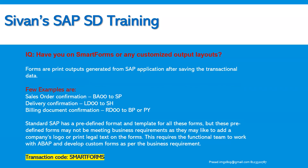Have you worked on smart forms or any customized output layouts? This is simple — it is totally customized, not standard. You can explain whatever you have worked on. These are print outputs generated from the SAP application. Examples: sales order confirmation sent to the sold-to party, delivery confirmation sent to the ship-to party, and billing document confirmation sent to the bill-to party or payer. Standard SAP has a predefined format for all these forms, but they may not meet business requirements — companies may want to add a logo or print legal text. This requires the functional team to work with ABAP and develop custom forms as per business requirements. They use transaction code SMARTFORMS to maintain smart forms. SAPscript is no longer available in ECC or S/4HANA systems.